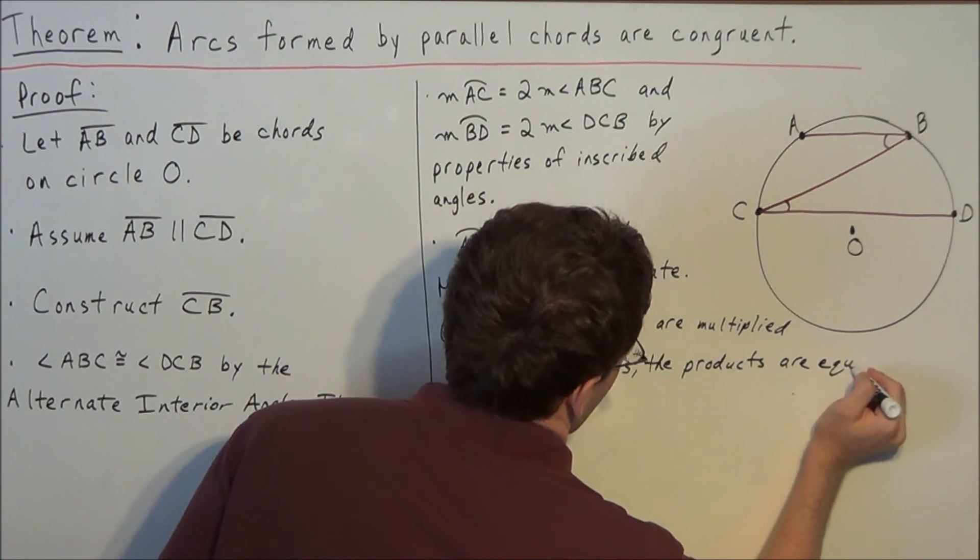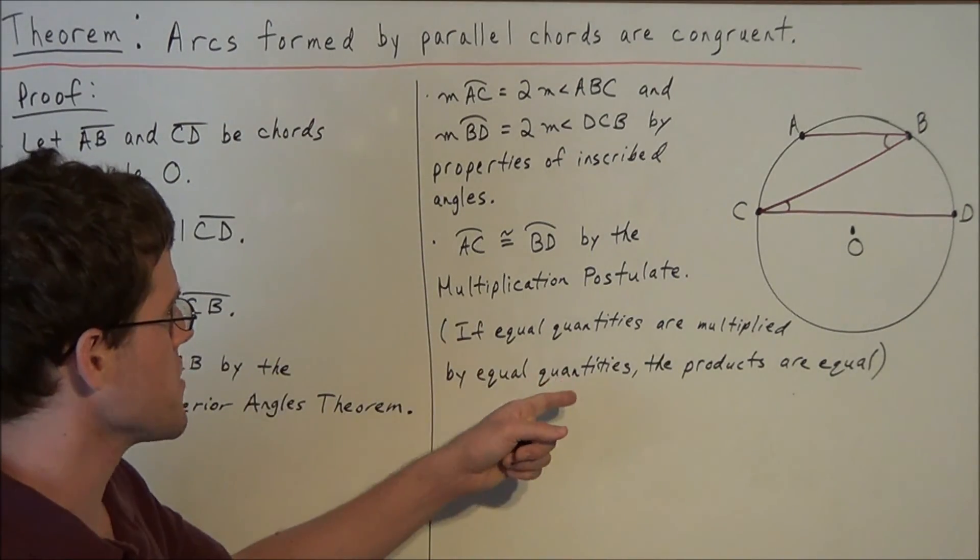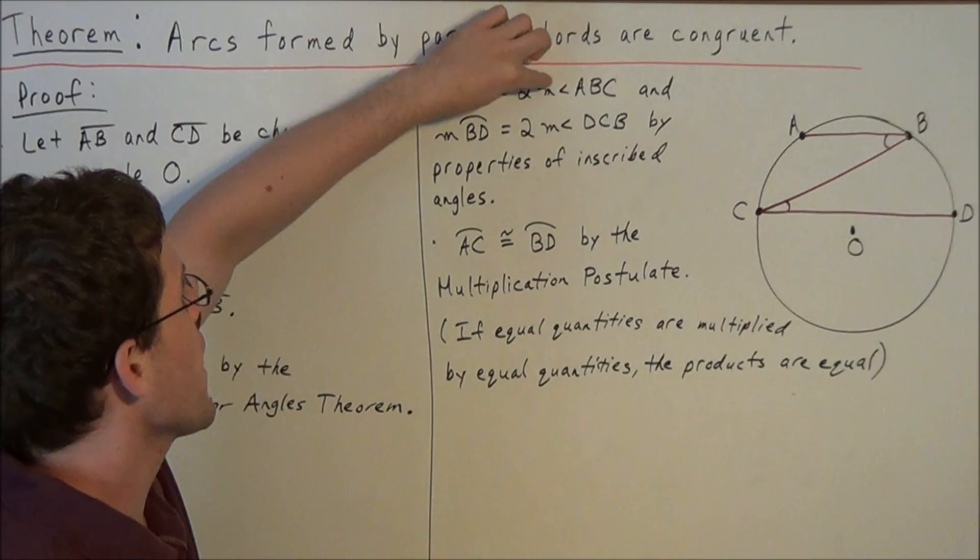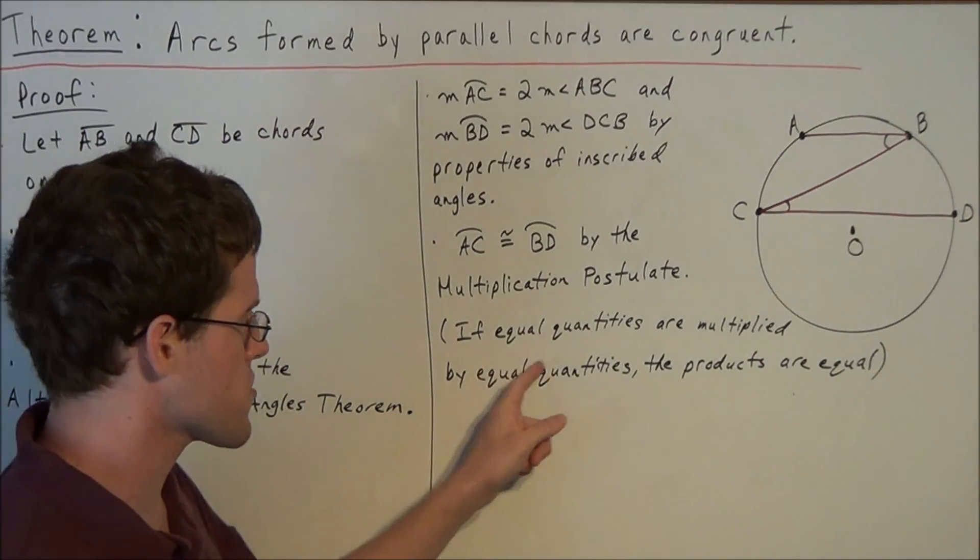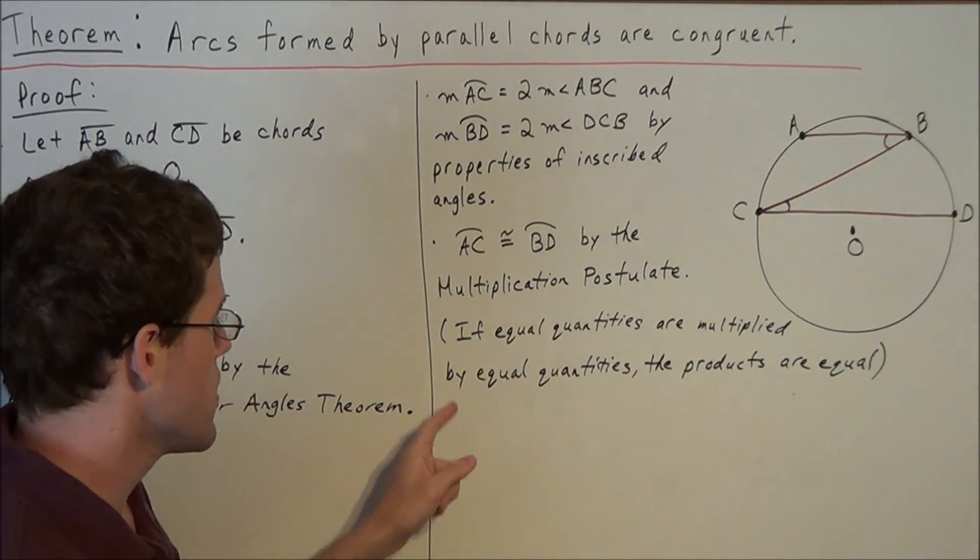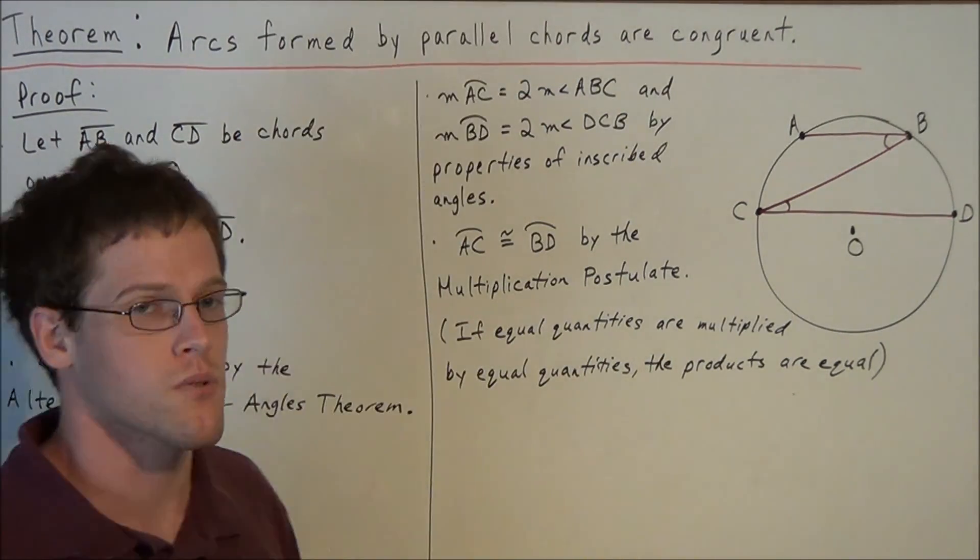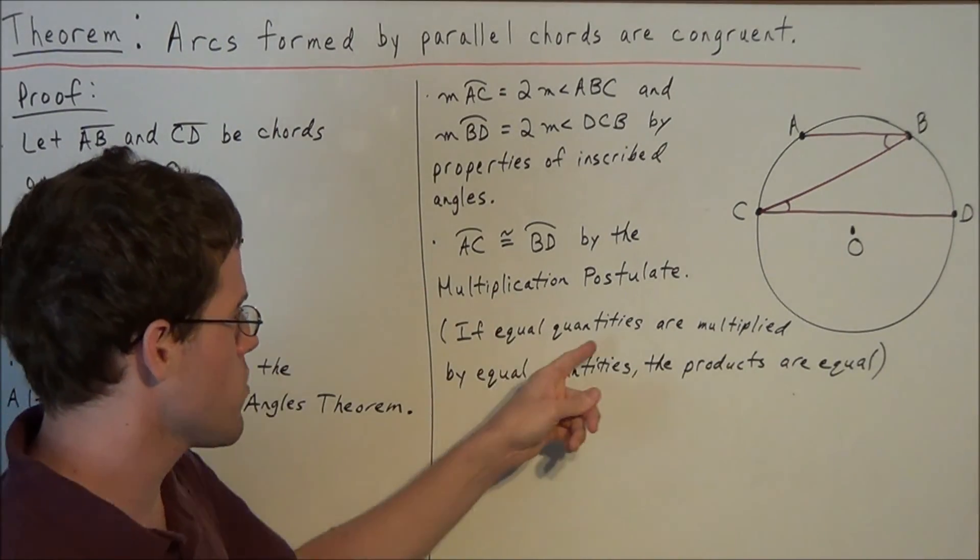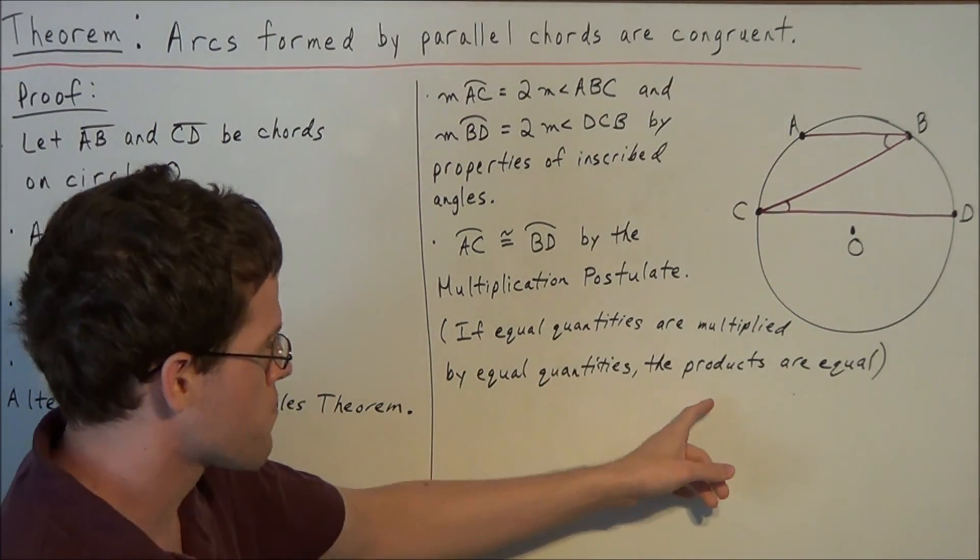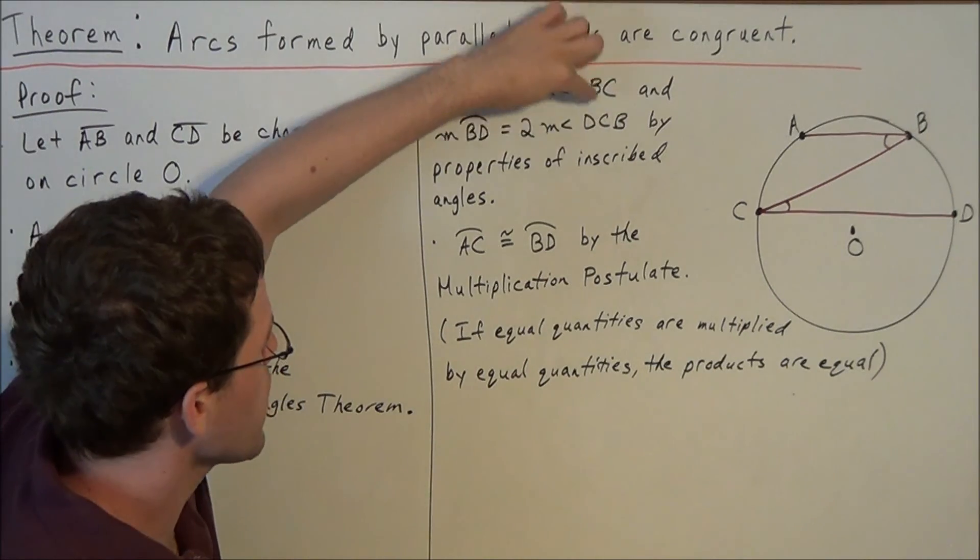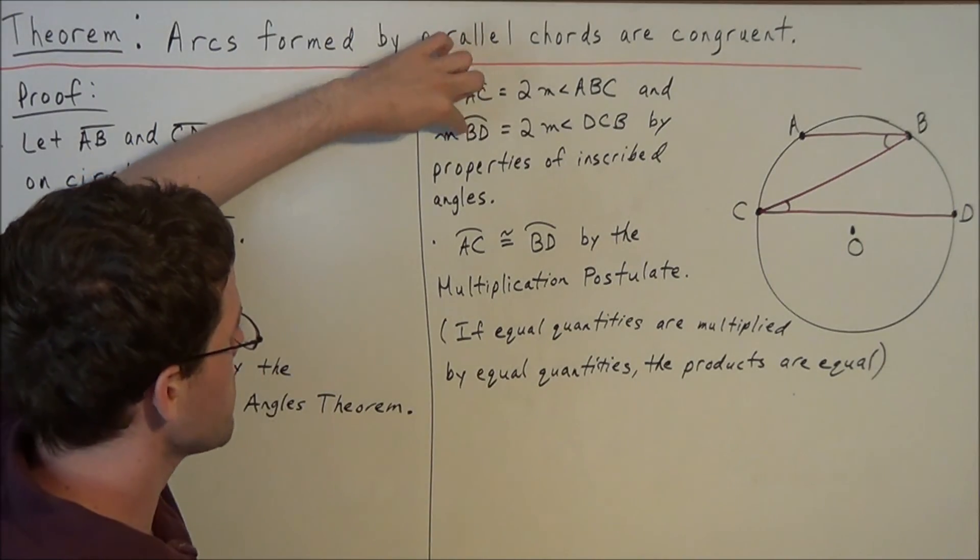And now we're just going to take a look at why we're using this postulate to finish this proof. Well, we're saying if equal quantities, which we have angle ABC and angle DCB, we showed before that those angles are congruent, so those are our first equal quantities, are multiplied by equal quantities. Well, notice how they're both being multiplied by two. And two is equal to itself, so we have equal quantities being multiplied by equal quantities. And the follow-up of this, we have the products are equal. So this tells us we have two equal quantities being multiplied by two equal quantities. Therefore, the products, arc AC and arc BD, are equal.